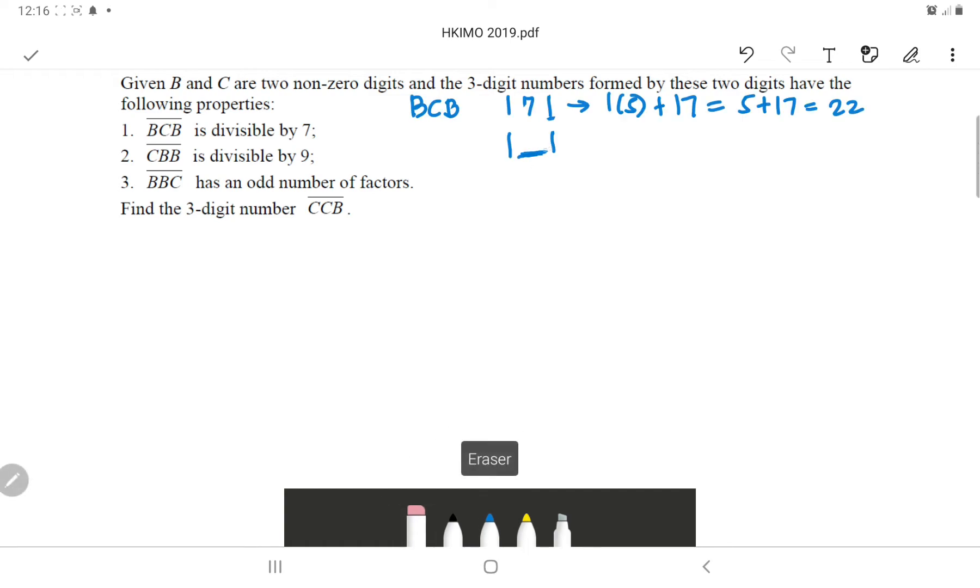Let's proceed to 2. 2 plus 2 is 4. So you need 5 to get a sum of 9, since 9 is divisible by 9. Therefore, if you have CBB, CBB is 5, 2, 2. 5, 2, 2 is definitely divisible by 9.